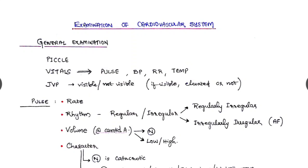Whether there is any pallor, icterus, cyanosis, clubbing, and lymphadenopathy. Vitals we have to check and also JVP.